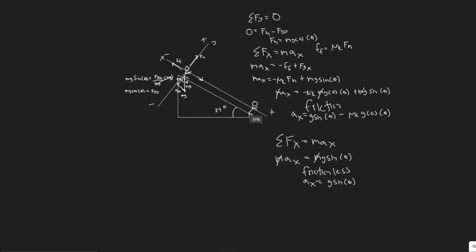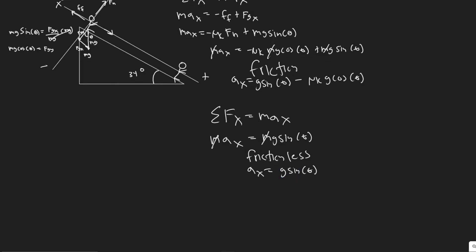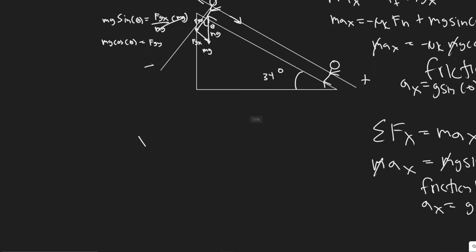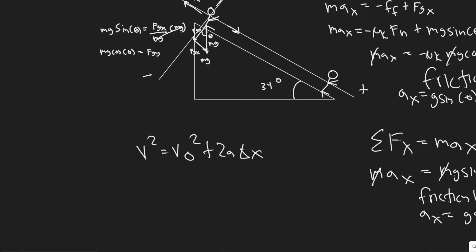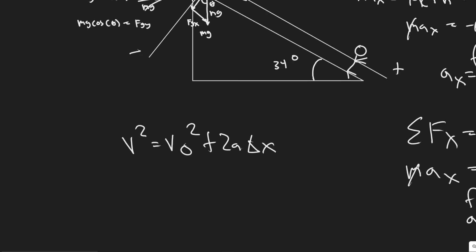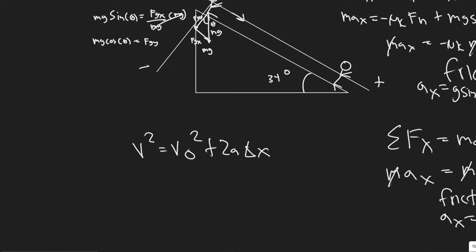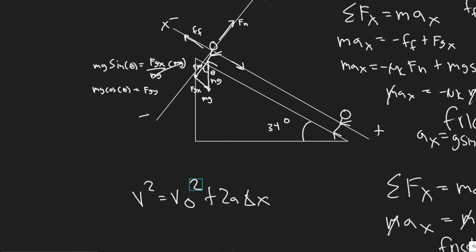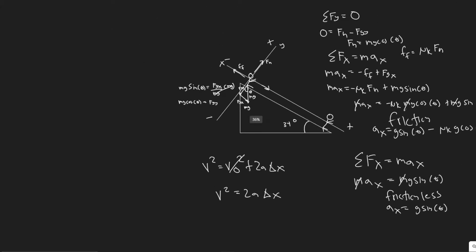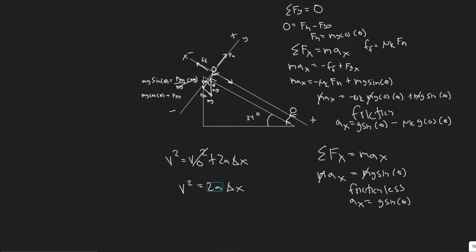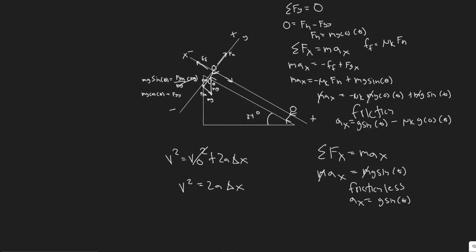Now we use the kinematic formula v² = v₀² + 2a·Δx. Since the child starts from rest, v₀ = 0, so v² = 2a·Δx. We'll plug both accelerations into this formula to get velocity expressions, which will allow us to solve for μk.